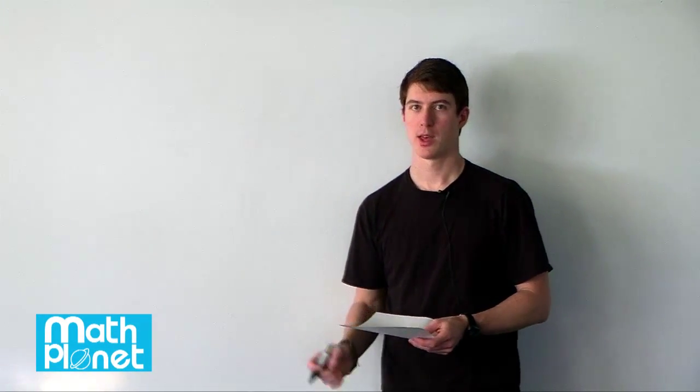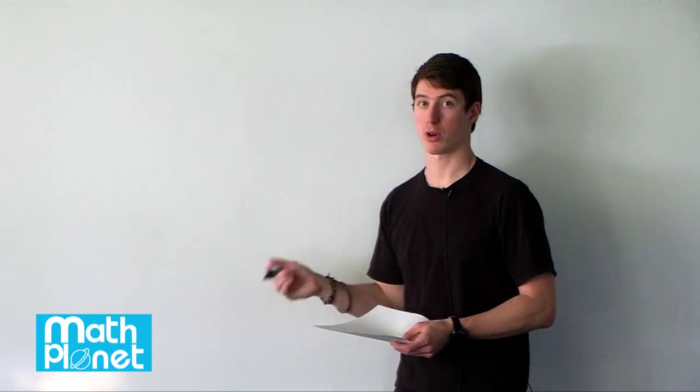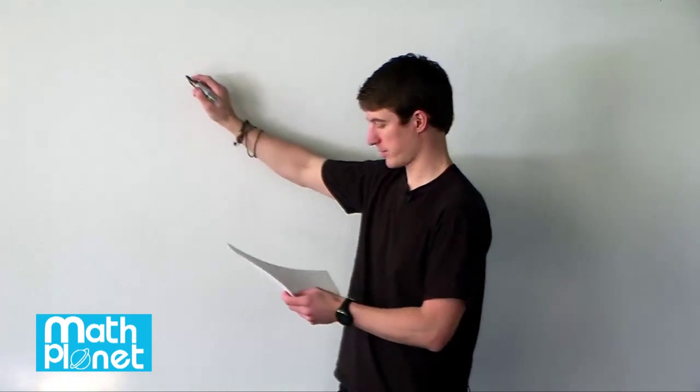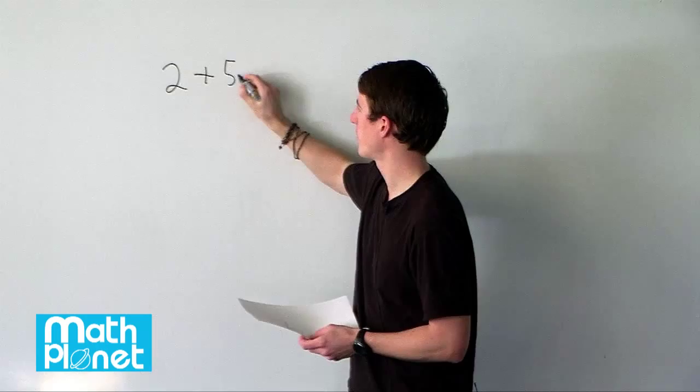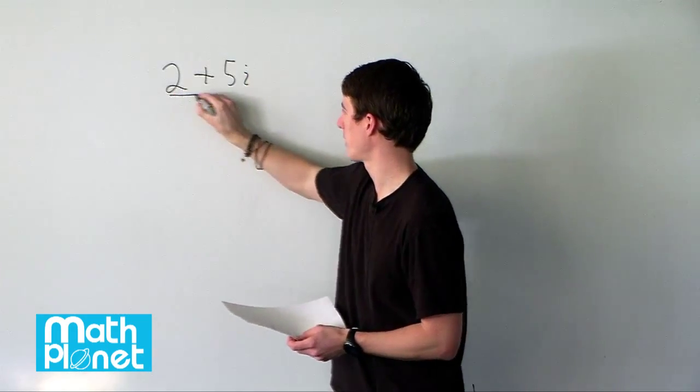Here we have a complex number that we want to write in a slightly different form, a more common form. So we have a complex number 2 plus 5i divided by i.